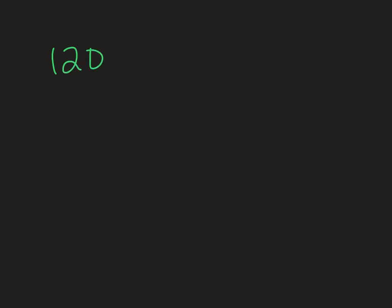Let's say we were doing 120. Scientific notation always has one number, then the decimal point, then the rest of the number. We can have the zero or not — it matters for sig figs, but we're not doing sig figs. So if you wrote 1.2, that'd be perfectly fine. Now we need the times ten part. 120 is a big number, bigger than one, so it's going to have a positive exponent. We need to figure out how many places we moved that decimal point — it always originates at the end for a whole number. We moved it 1, 2 places, so it's 1.20 times 10 to the 2.